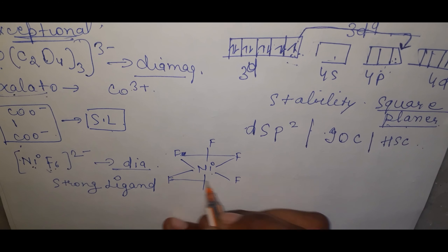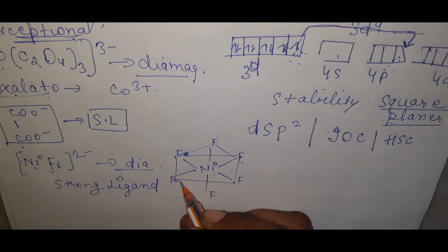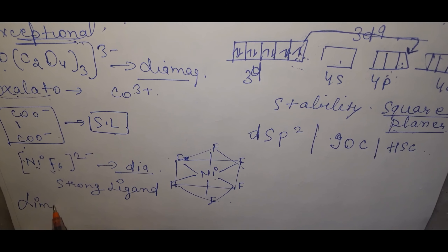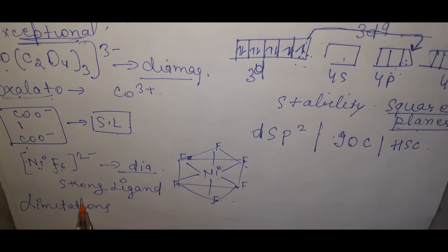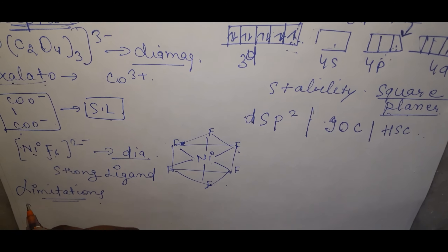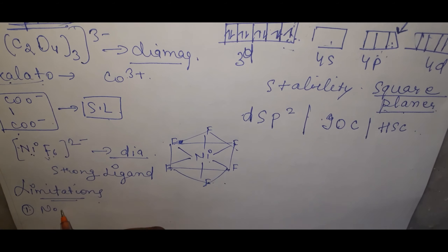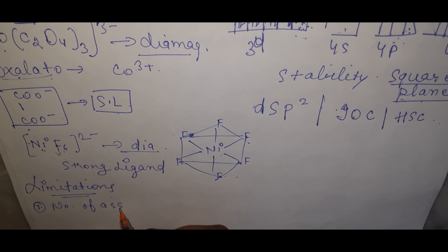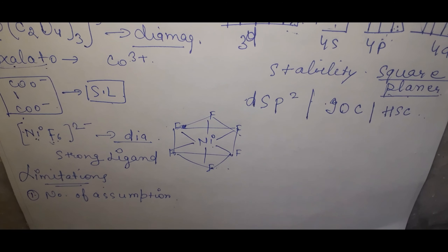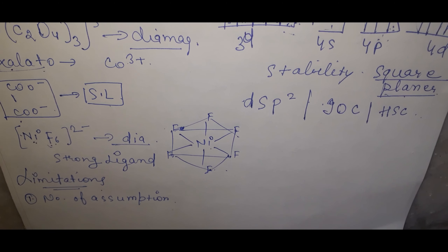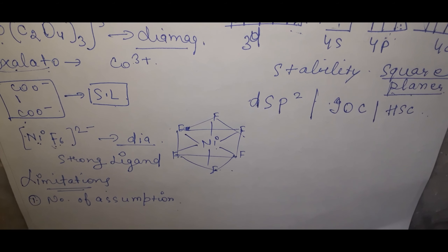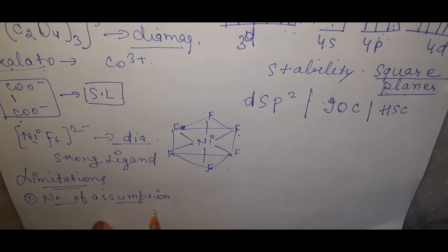Limitations of Valence Bond Theory: First, it is based on a large number of assumptions — for instance, it cannot specifically distinguish which ligand is strong and which is weak.